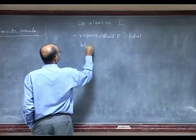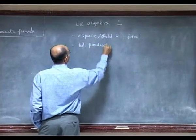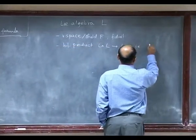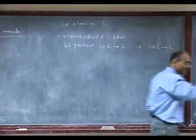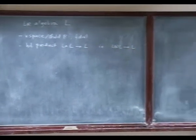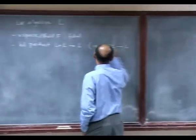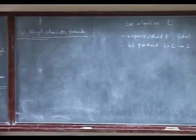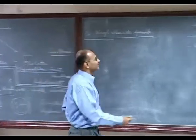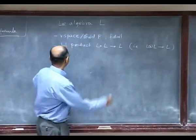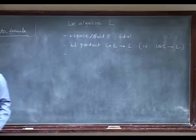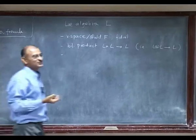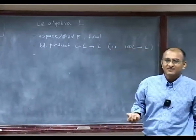For us, this is a vector space over a field F, and in the beginning part it will always be finite dimensional. There's a bilinear product L × L → L, which has other properties: namely, this product is skew-symmetric and it is not associative; instead it follows the Jacobi identity.